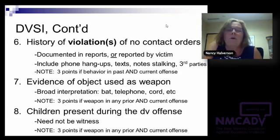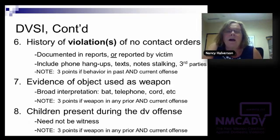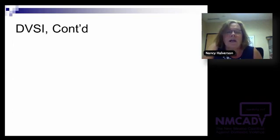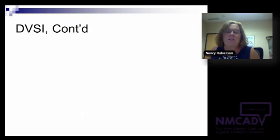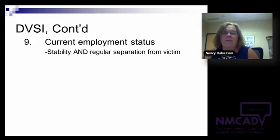Item nine is current employment status. It's a risk factor for probationers in general, but especially with domestic violence — it's about stability, financial stability, and regular separation from the victim. I'm always wary of cases where the person works from home. We had a case where a man took his victim to work at a hotel, locking her and their son in an empty room — she never got a chance to reach out for services because of constant surveillance and no separation. Employment is a yes-or-no question, but probation officers should think about it in terms of both stability and the separation piece.